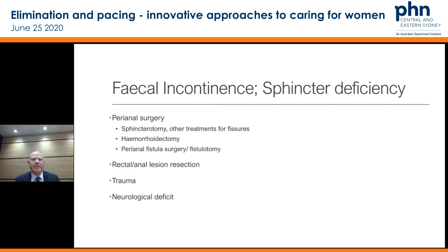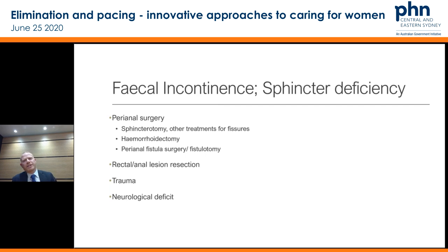Other causes for sphincter deficiency include rectal or anal lesions — the different neoplastic or cancerous processes of the rectum or anus. Trauma — either direct trauma to the sphincter or secondary type trauma, such as someone who develops a pelvic fracture and then the neurological deficits.